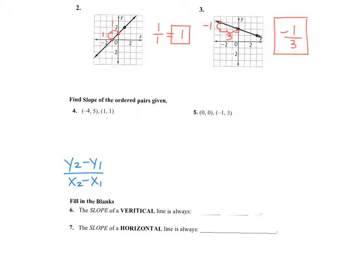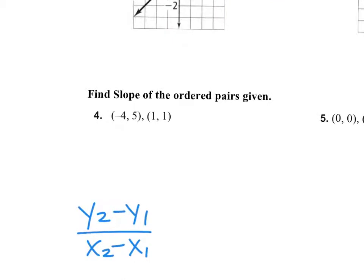If I were you, I would specify which is which. You can call either one your x1. So let's say I call negative four x1. What is five then? Y1. Remember, every point is an x and a y. So it's x1, y1. And then this would be x2, y2.